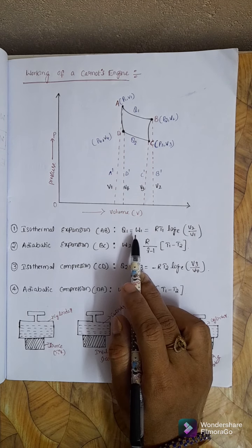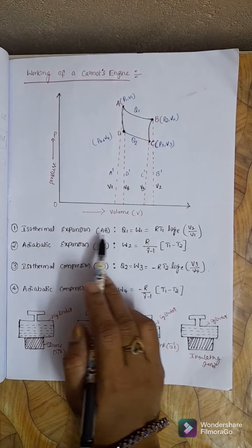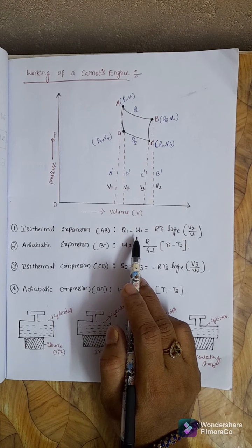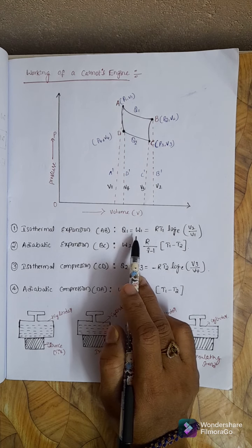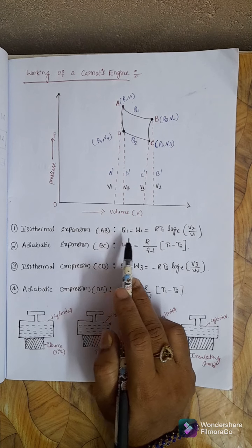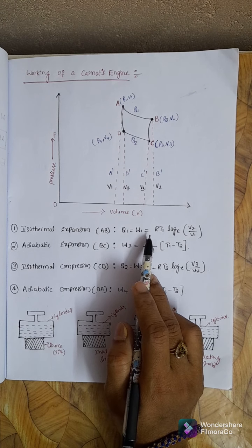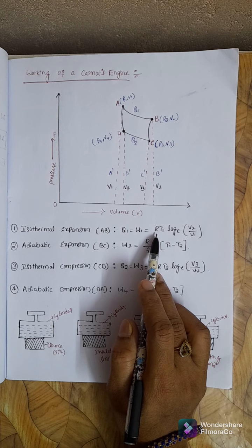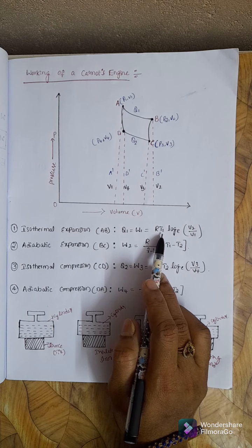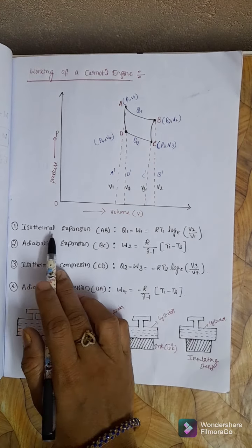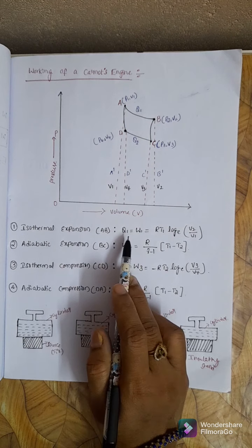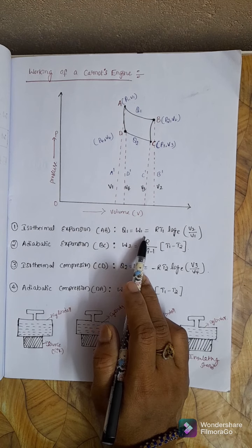The work done in isothermal expansion is: Q1 = W1 = R·T1·log(V2/V1). Since the Carnot engine is a heat engine that converts heat into work, Q1 is equal to W1, where R is a constant and T1 is the initial temperature of the gas.